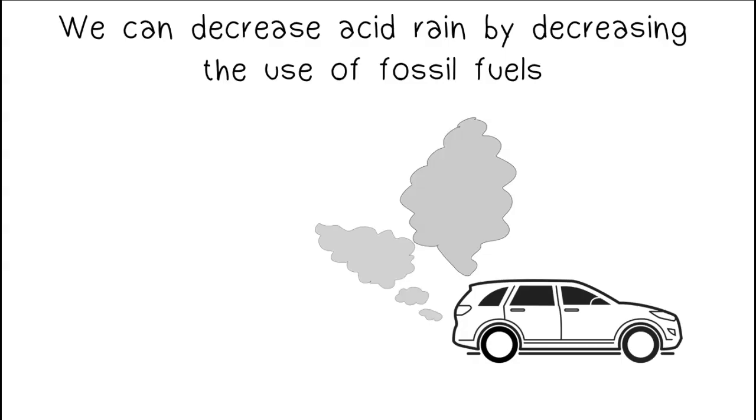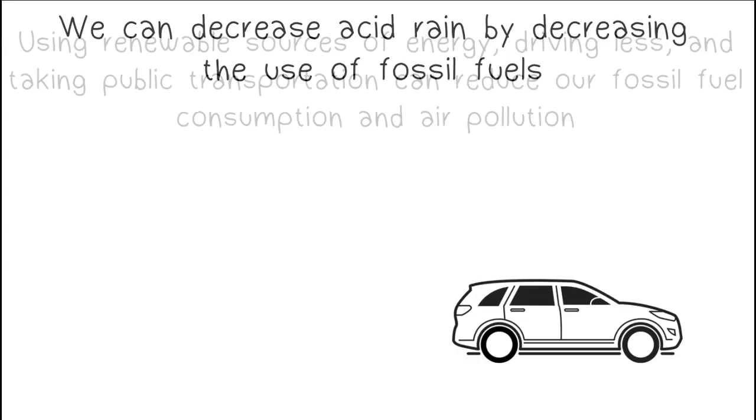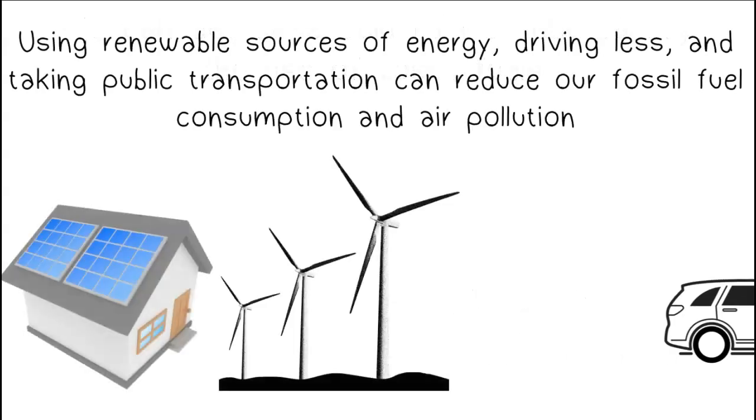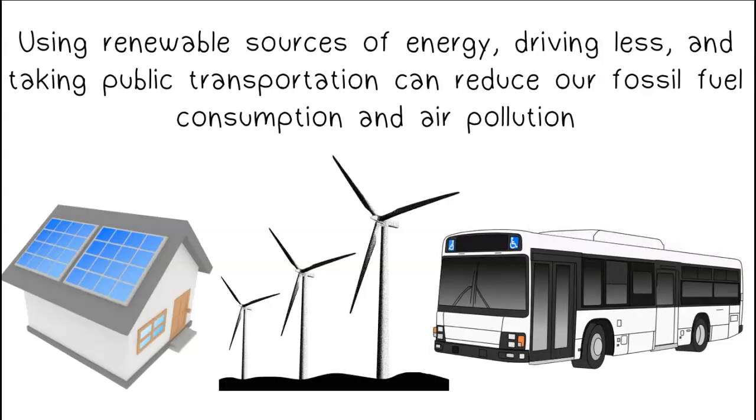We can decrease acid rain by decreasing the use of fossil fuels. Using renewable sources of energy, driving less, and taking public transportation can reduce our fossil fuel consumption and air pollution.